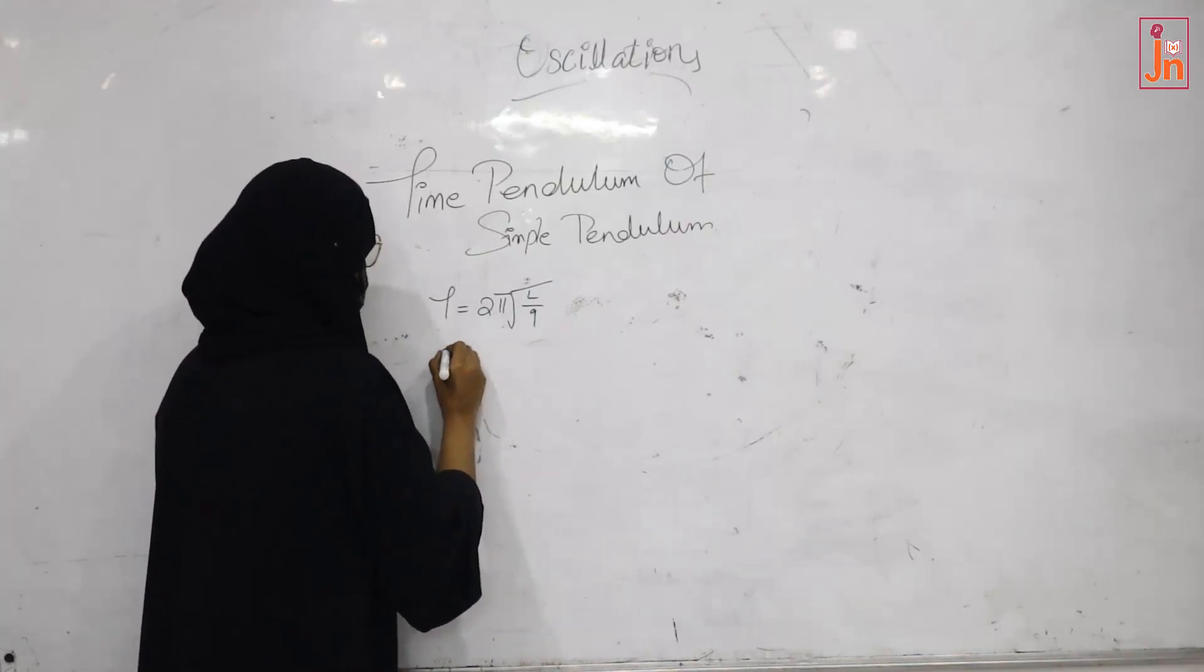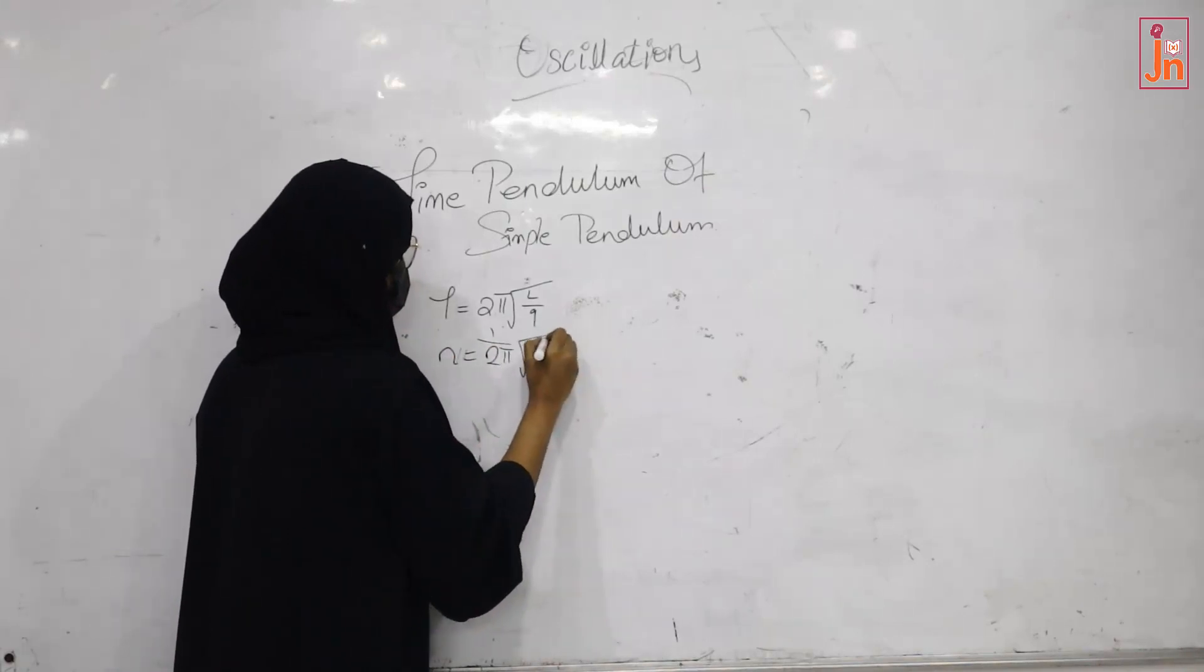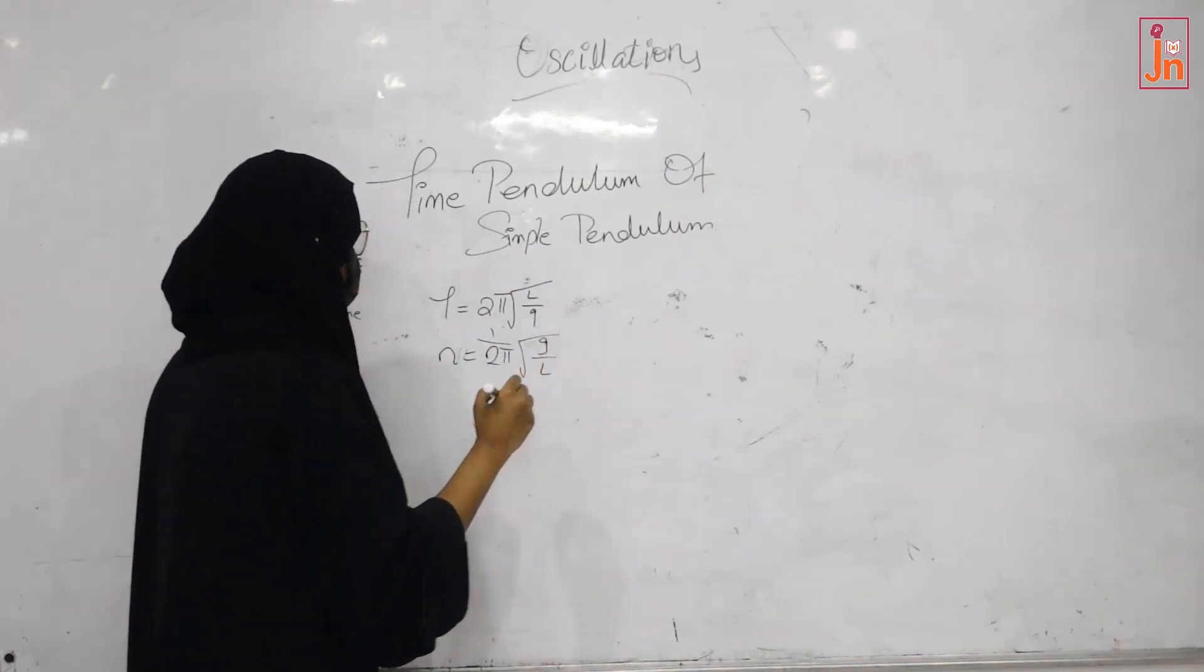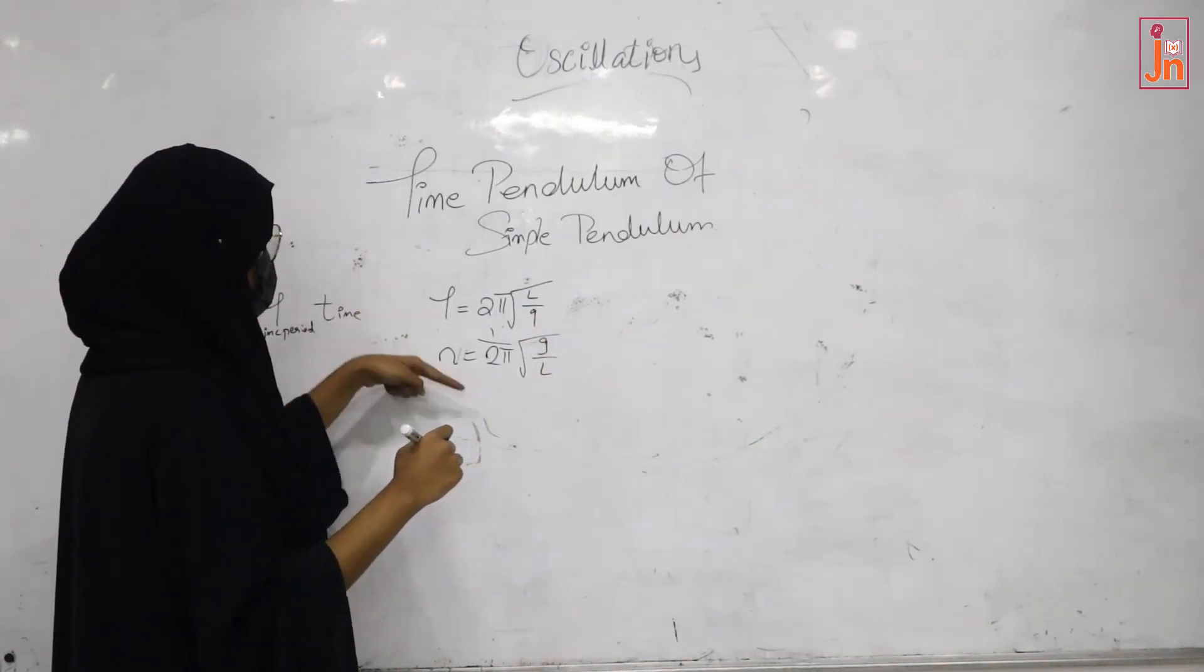And frequency n is equal to 1 by 2π times the square root of g by l. Frequency and time period are opposite.